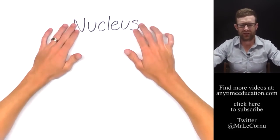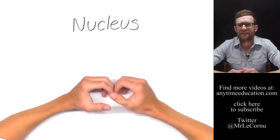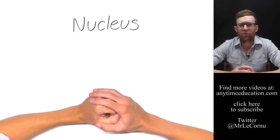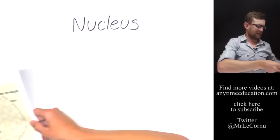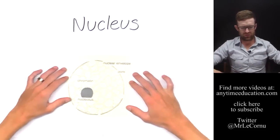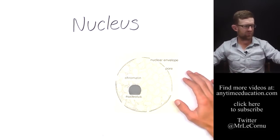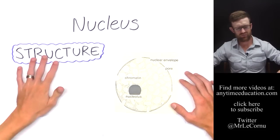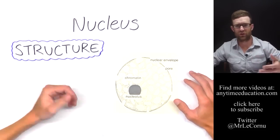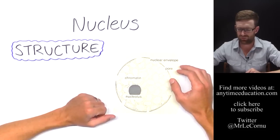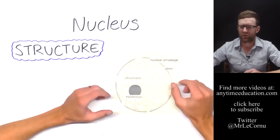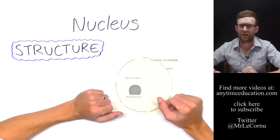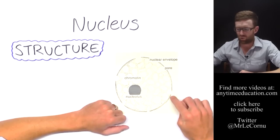The first organelle we're going to look at is the nucleus. The nucleus is the most prominent organelle inside of a cell — it's quite central and obvious. Its structural features include a nuclear envelope around the outside, which has a double membrane, and it has these things called nuclear pores.